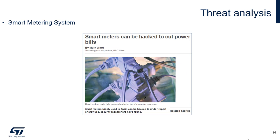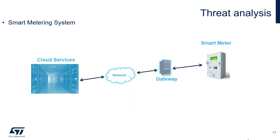Now let's take a look at a real-world example — a simple analysis of a smart metering system. This analysis can really be applied to most IoT systems. A typical architecture of a smart metering system consists of a cloud, network, gateway, and the actual smart meter.